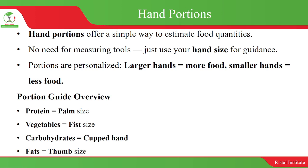The aspect of hand portions — hand portions offer a simple way to estimate food quantities. Instead of using standard measuring equipment like cups or weight scales, you can use your hand as a guide for your portion sizes. There is no need for measuring tools — just use your hand size for guidance. Portions are personalized: larger hands equal more food, and smaller hands equal less food.